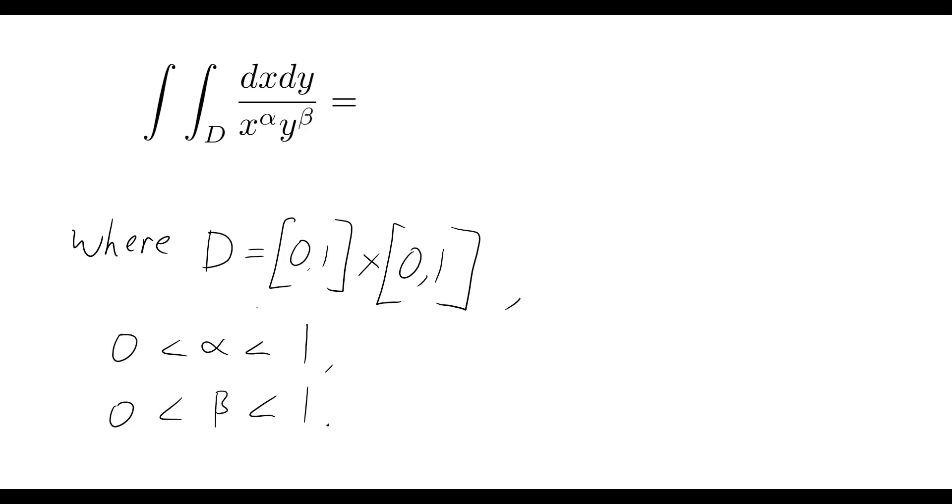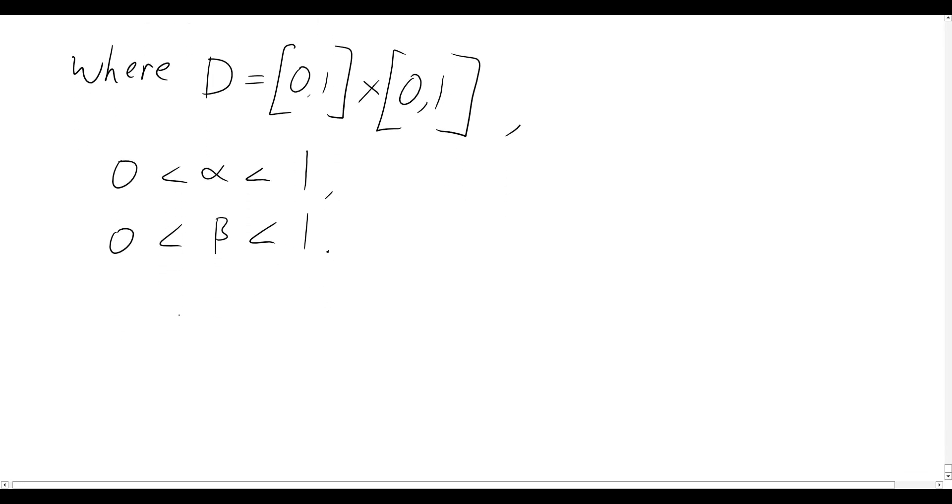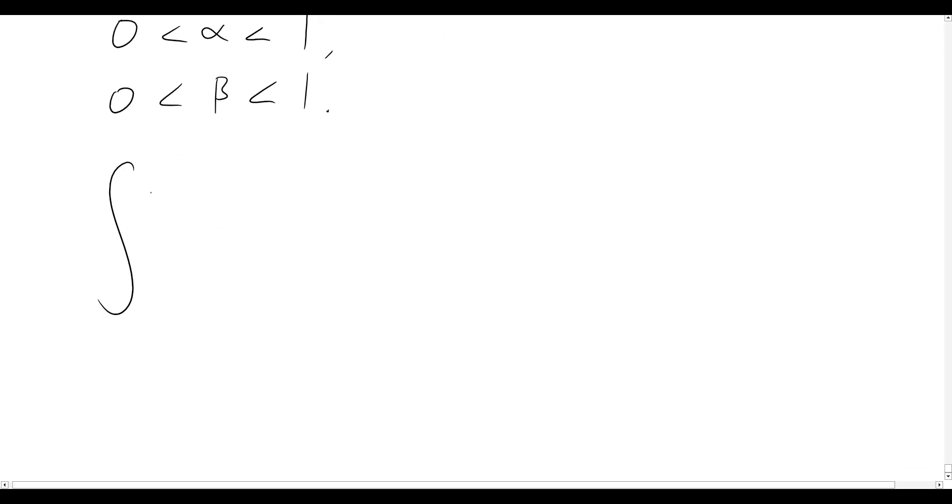Okay, so let's get right into it. The first thing that we can do is rewrite this double integral with our actual upper and lower limits of integration, since we know that we're just going from zero to one, zero to one. So our problem now becomes simply both of them zero to one, zero to one, dx dy over x to the alpha y to the beta.